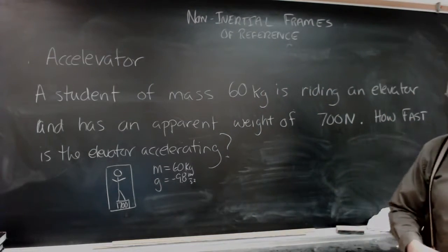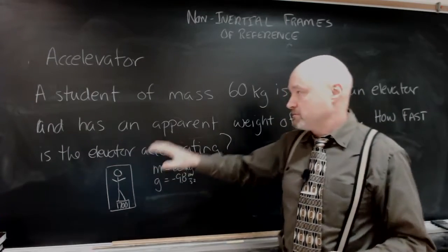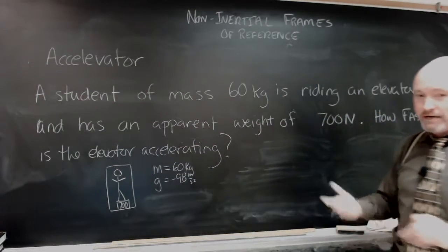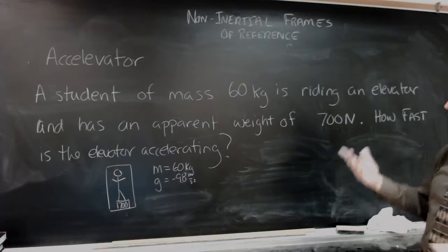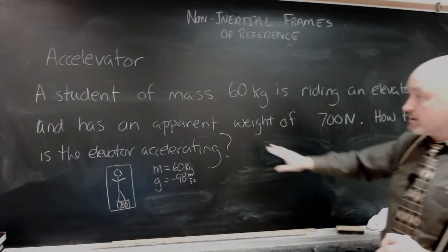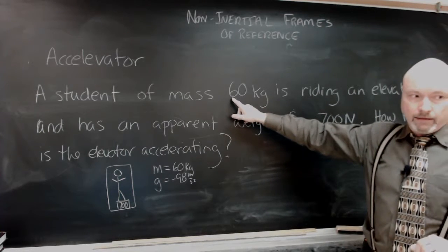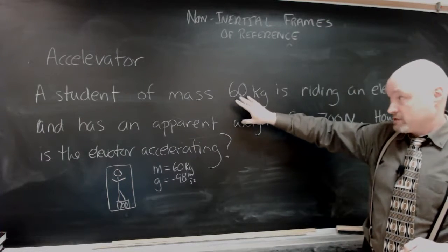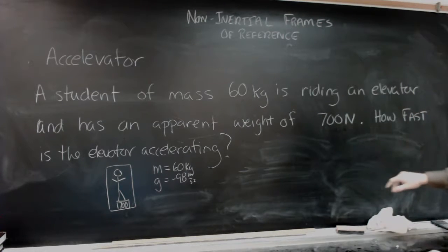Here we go again with our accelerator problem. A student, and this has to be a student because they have a mass of 60 kilograms, can't be an elderly person, is riding an elevator and this person has an apparent weight of 700 newtons. You'll notice they weigh a little bit more than I would expect. I would have expected 600 newtons. Instead, they have a weight of 700 newtons.